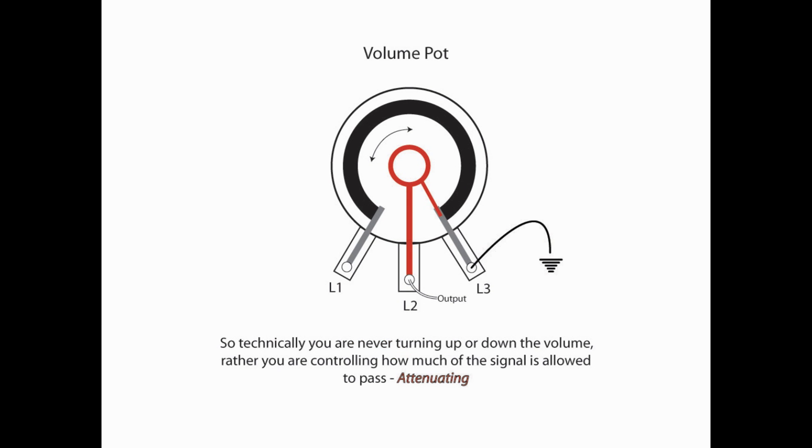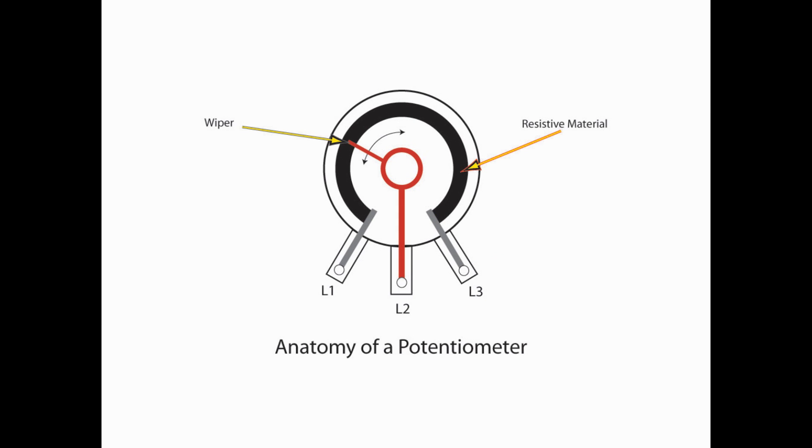So, one of the interesting things that this does is it changes people's perspective on a volume pot. In reality, you're never really turning up or down the volume. Rather, what you're doing is controlling how much of the signal is allowed to pass through. That is also what's known as attenuating.